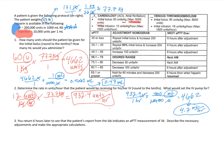We return six hours later to see the lab report. The patient has an APTT measurement of 34. Looking at the protocol, an APTT of 34 falls in the row below 35, which means we would repeat the bolus and then increase the infusion by 200 units per hour.